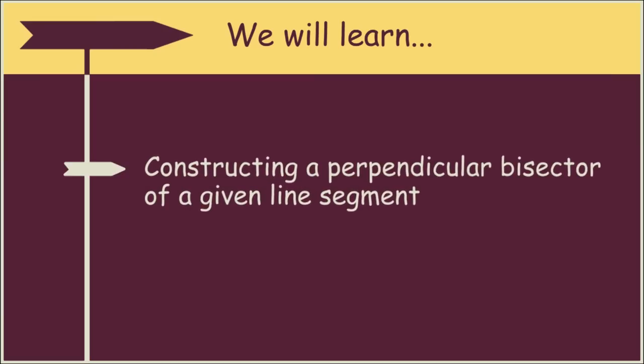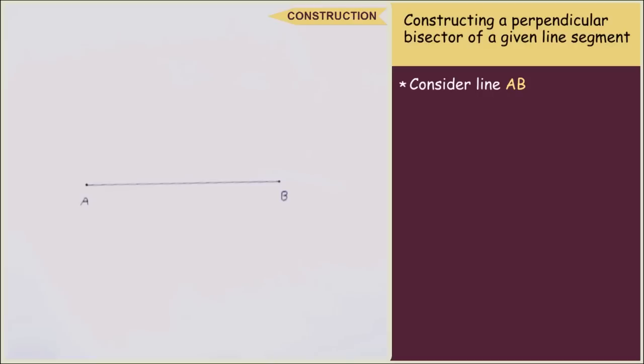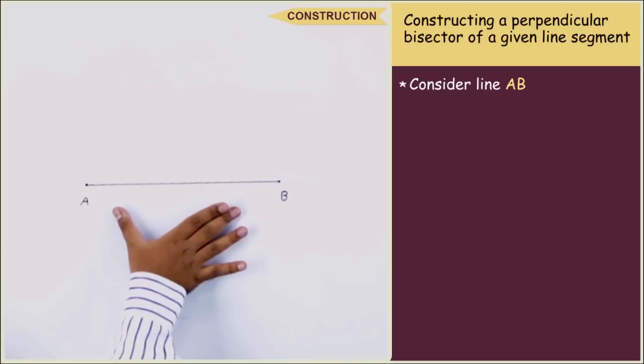How to construct a perpendicular bisector of a given line segment? Consider a given line segment AB.